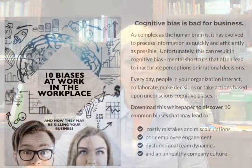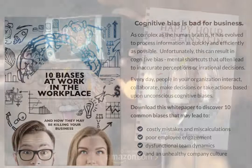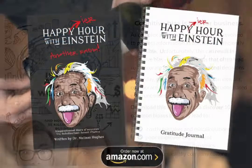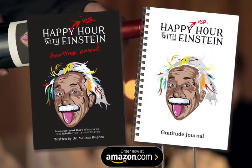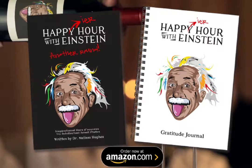If you want to learn more about cognitive biases and the way they influence irrational decision making, judgments, and assumptions, check out my blog post. You can also access this free white paper, '10 Cognitive Biases in the Workplace.' And if you want to learn more about how the brain works and how to make it work better, check out my book, 'Happier Hour with Einstein,' and the full color companion gratitude journal, available now on Amazon.